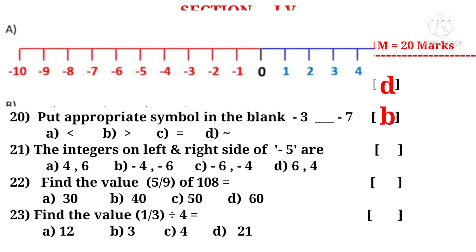The integers on left and right side of minus 5 are. See that minus 6 is on the left side and minus 4 is on the right side of minus 5. So the correct choice is C.